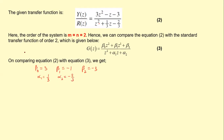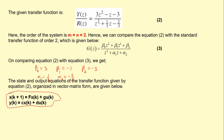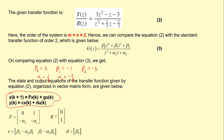Now that we have these coefficients, we need to obtain the state space model of the given transfer function using the controllable canonical form. For this second order transfer function, the required matrices F, G, C, and D are given by the standard form. We will simply substitute the values of the alphas and betas into these matrices to get the required matrices.